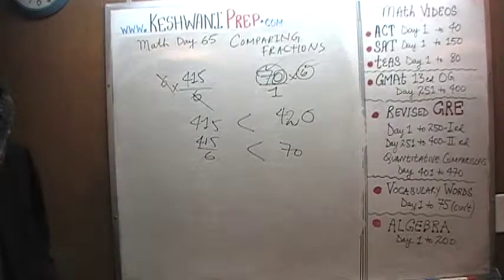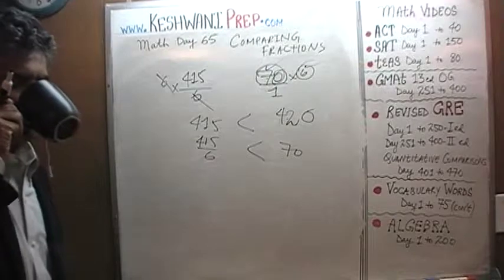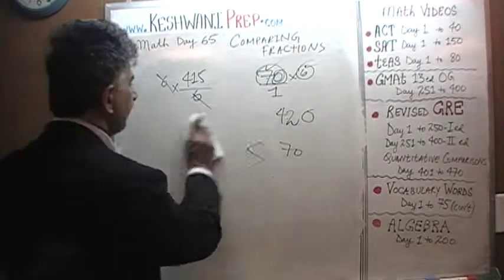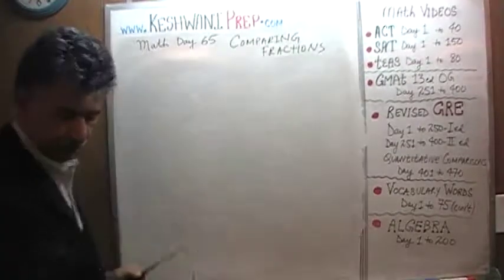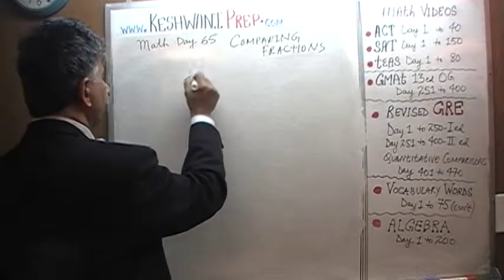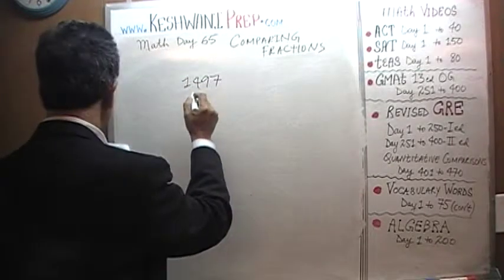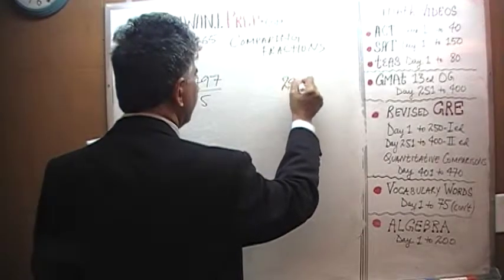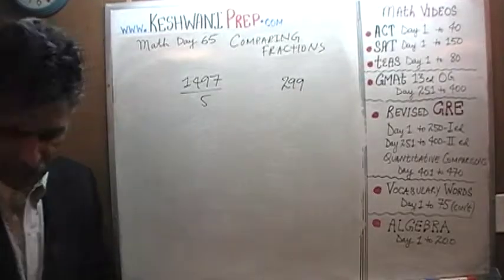Let's do one more. 1497 over 5 versus 299. Exact same deal. Nothing has changed.